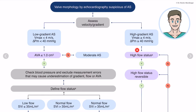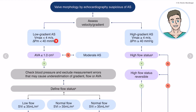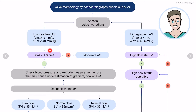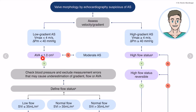If we do have a high flow status, we have to think about how to reverse it. On the left side, we see that there is a low-gradient aortic stenosis with a gradient below 40 mmHg and a maximum velocity below 4 meters per second. If the aortic valve area is below one square centimeter, we need to move on. If the aortic valve area is above one square centimeter, you can call it a moderate aortic stenosis.